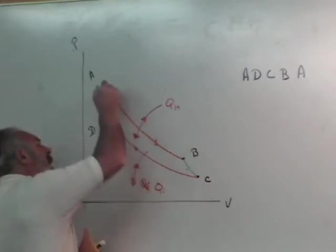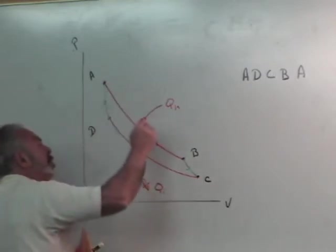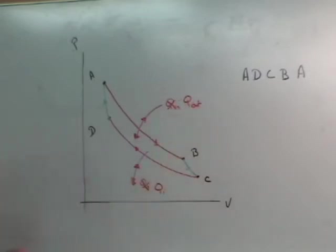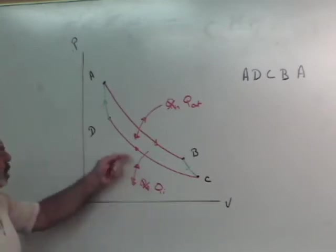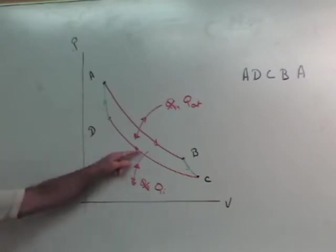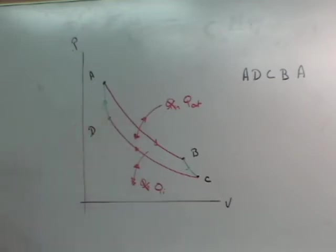Then we get to point C, and we enjoy an adiabatic compression from C to B. That will raise the temperature back to the original higher temperature reservoir, and then we have an isothermal compression from B to A, and it does the same thing. It reverses the direction. Now, when you're doing an isothermal compression, you are rejecting heat, so this becomes Q out.